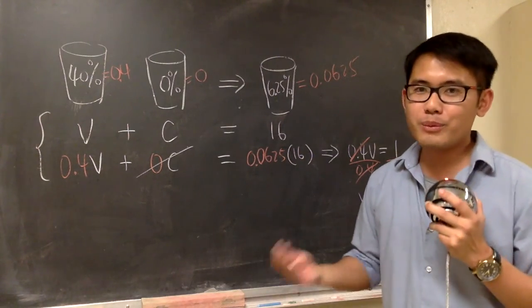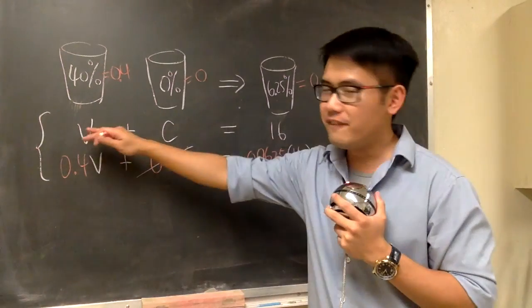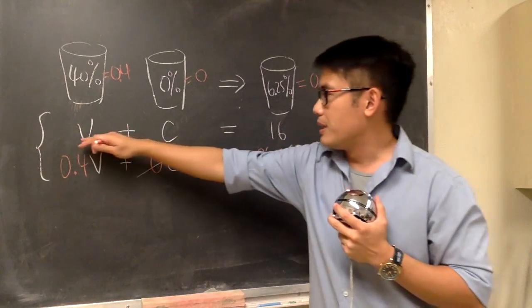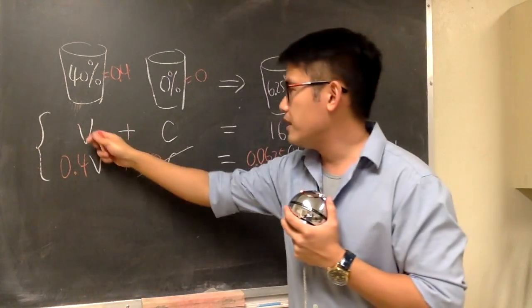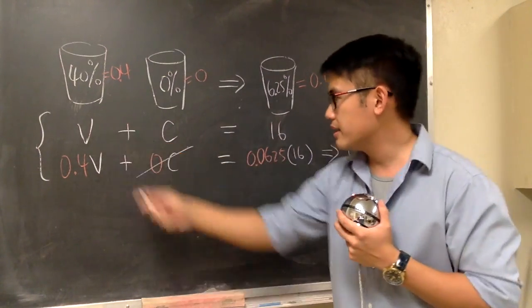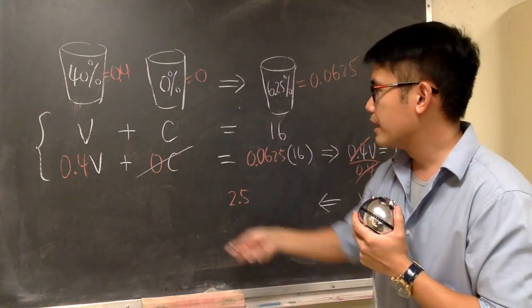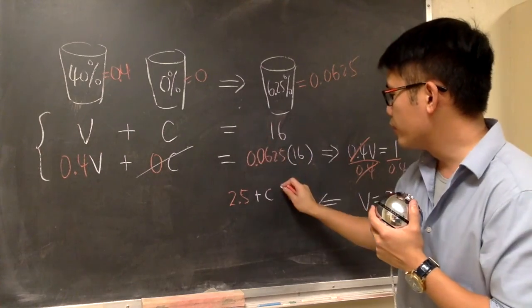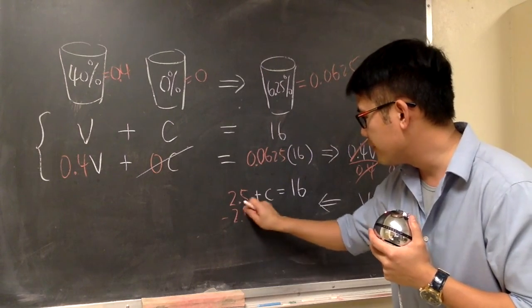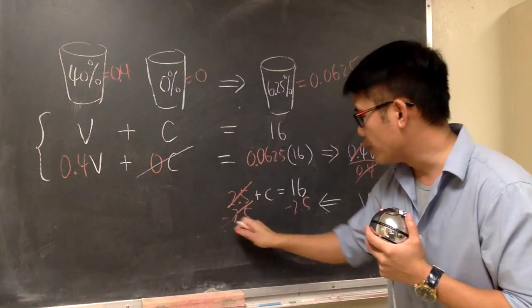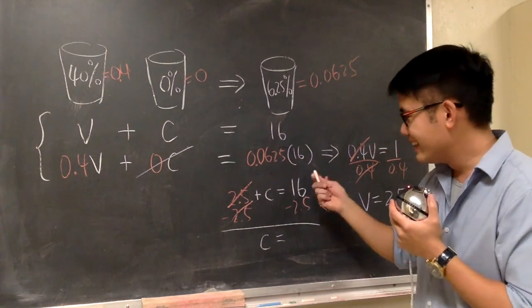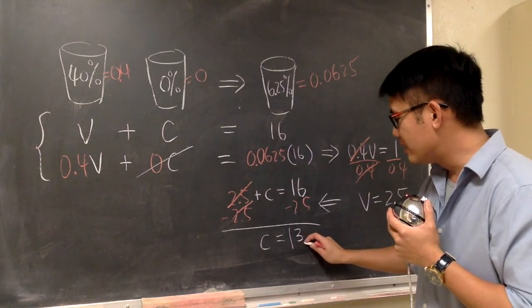And now, how about the cranberry juice? Let's plug this into the first equation. We don't have C in the second equation, so we cannot use the second equation. So, plug that into the first equation. We know V is 2.5 now. So let me just take this and go back, plug in into here. 2.5 plus C is equal to 16. Well, what do we do? Subtract 2.5 on both sides. So that this and that will be canceled. And we will have C is equal to what? 16 minus 2.5. That will give us 13.5.